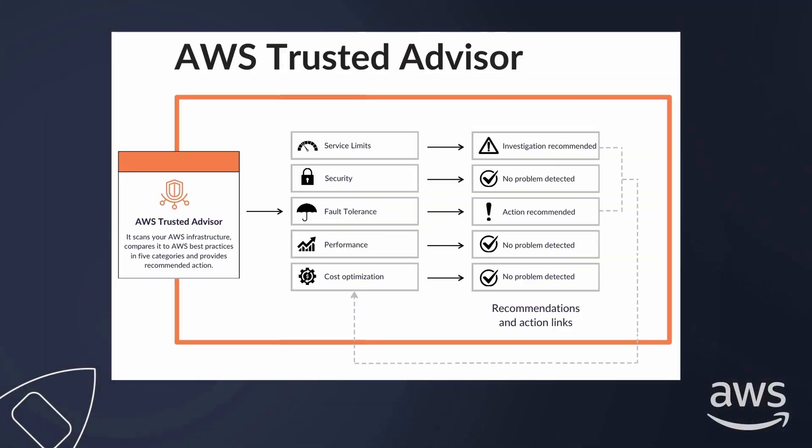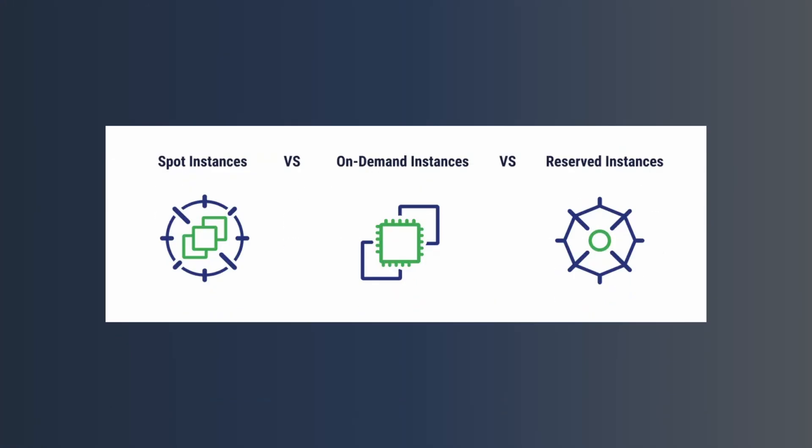The problem is, when you start a company or are just practicing, you may not know how much your application requires. For a web application or e-commerce website, you need to monitor traffic and performance first. Amazon provides the Amazon Trusted Advisor tool, which analyzes your metrics and gives suggestions to improve your instances. Trusted Advisor is also free.